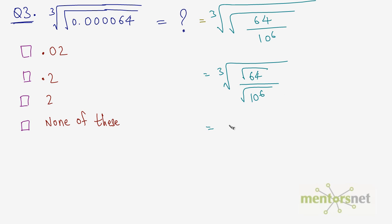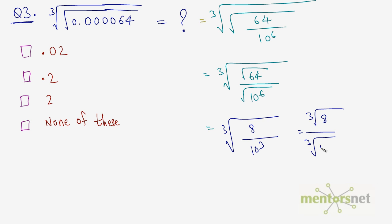The square root of 64 is 8, and the square root of 10 to the power 6 is 10 to the power 3, which is 1000. So we now have the cube root of 8 over 1000. The cube root of 8 is 2 — since 2 times 2 is 4 and 4 times 2 is 8. The cube root of 1000 is 10. Therefore the answer is 2 over 10, which equals 0.2.